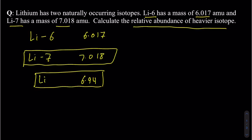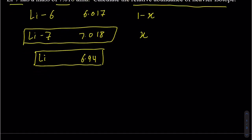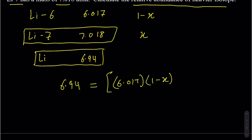To calculate the percentages, let's assume the heavier isotope (lithium-7) has a relative abundance of x. Then the lighter isotope (lithium-6) would be 1 minus x, because the total must equal 1. So we set up: 6.94 = 6.017 × (1 − x) + 7.018 × x.